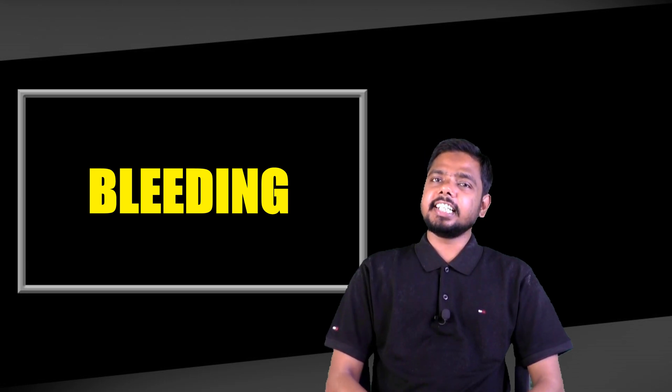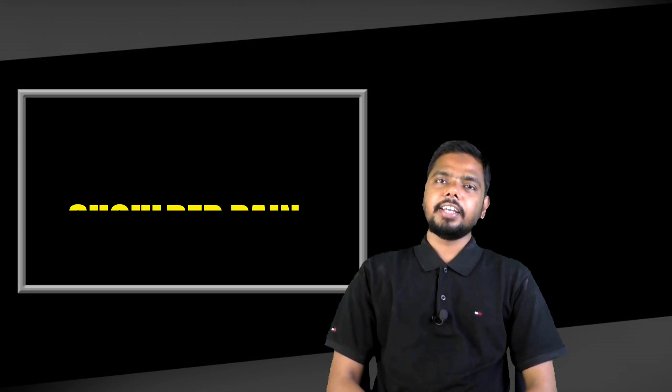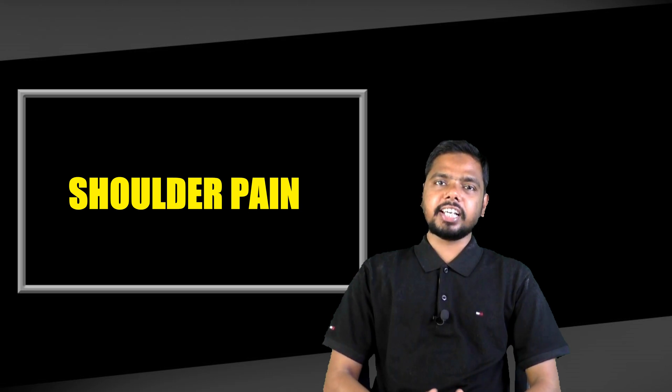This bleeding is quite different from the bleeding of a period. This bleeding can be lighter or heavier than a normal period. If you get ectopic pregnancy you can suffer shoulder pain. The main cause of this pain is blood leaking into the abdomen and irritating the muscle used to breathe.